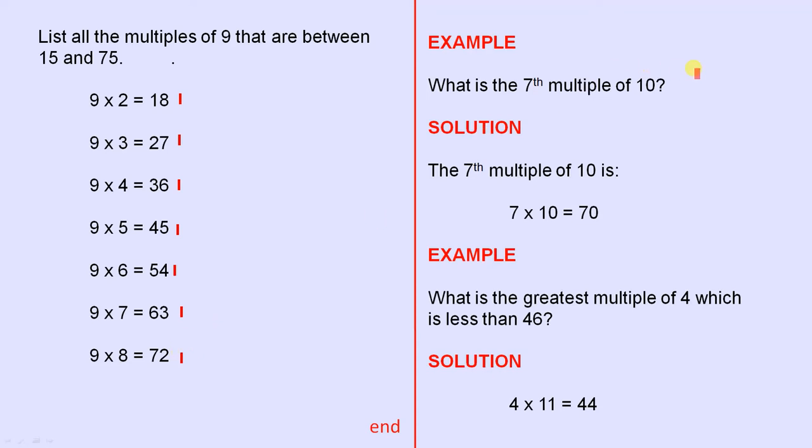Here's another example. What is the 7th multiple of 10? So the 7th multiple of 10 is 7 times 10, which is 70. So there it is there.